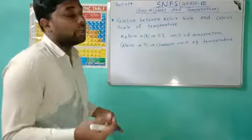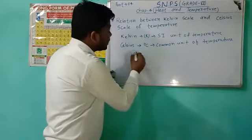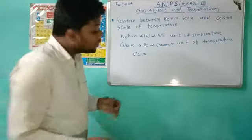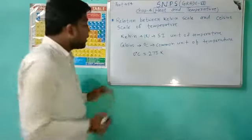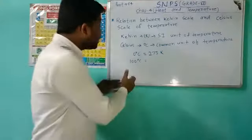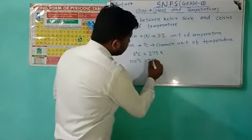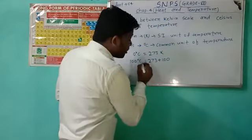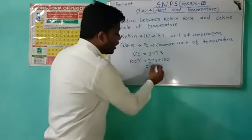So what is the relationship between the two scales? If we have zero degree Celsius, then the value in Kelvin is directly 273 K. If we have 100 degree Celsius and we want to convert it to Kelvin, we simply add 273, giving us 373 Kelvin.